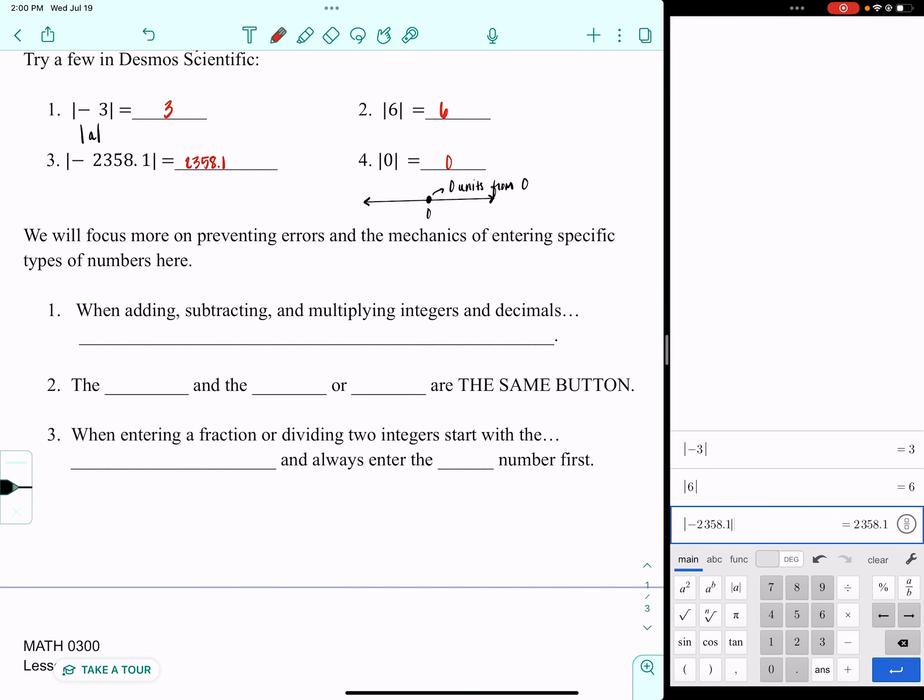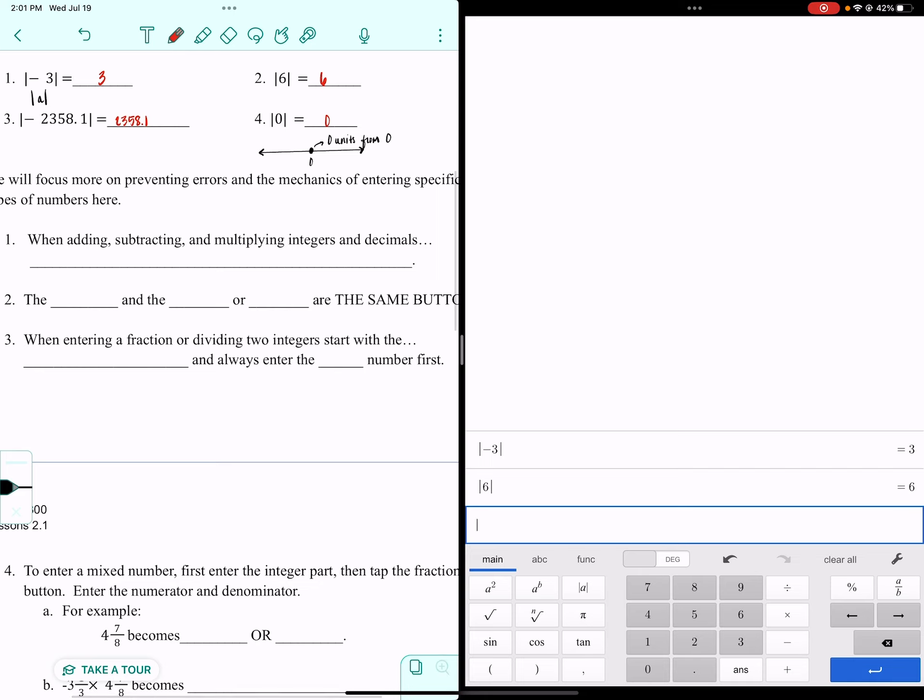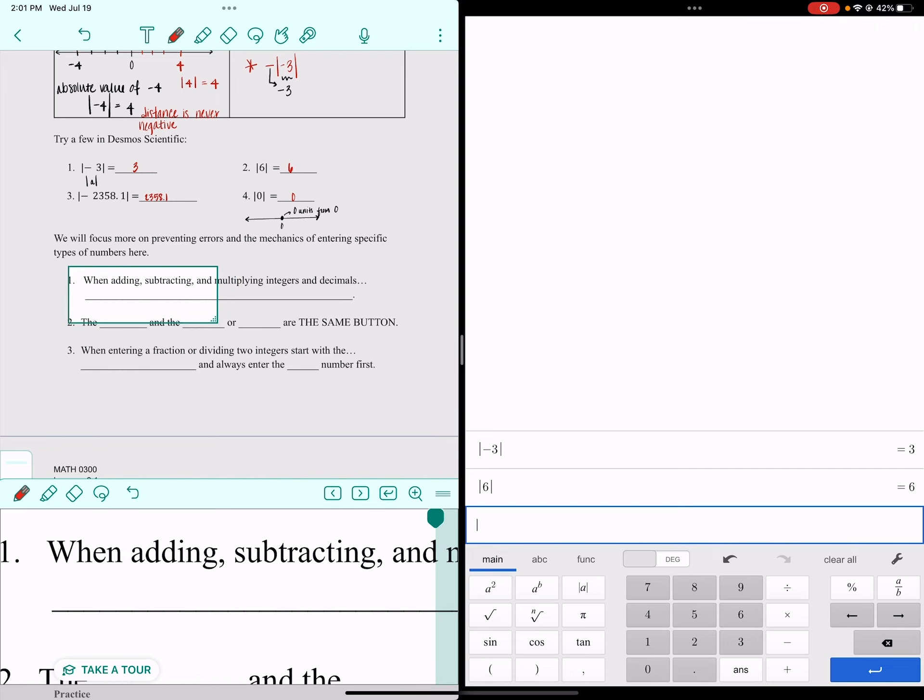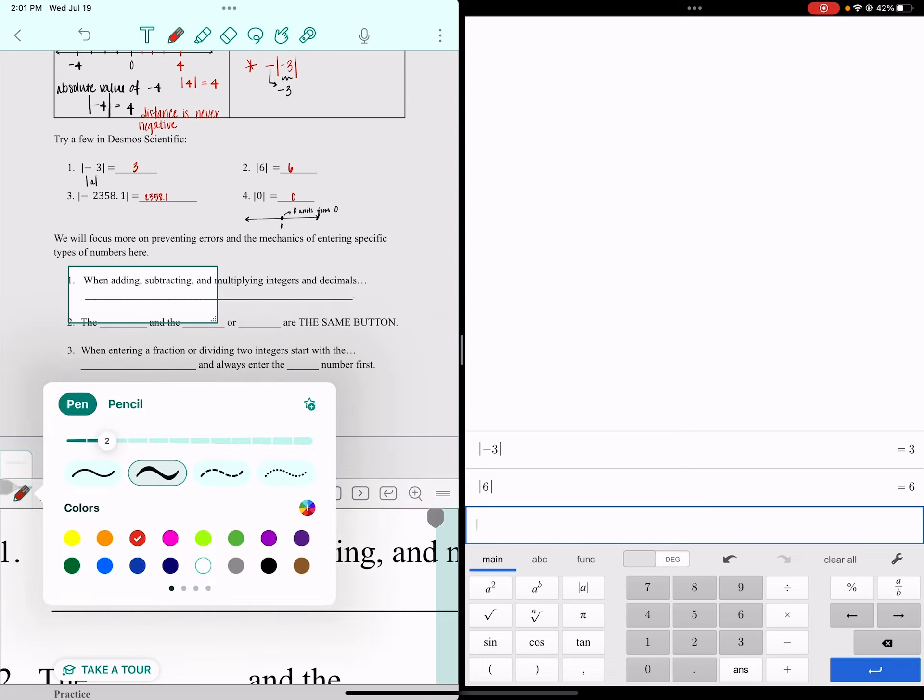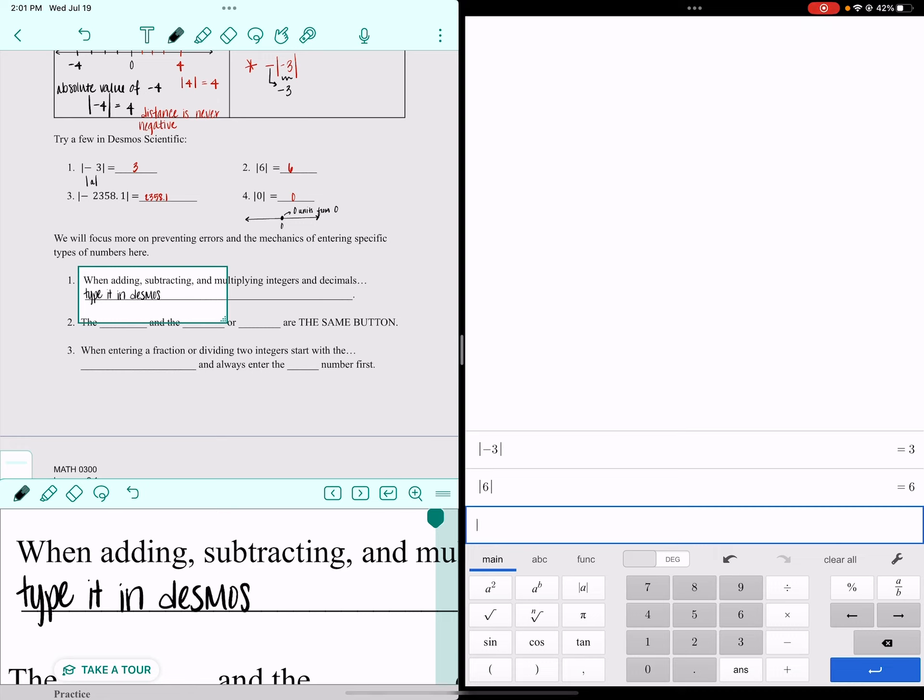I said before that we would focus more on preventing errors and entering things into the calculator rather than like when you were little and you counted bears in one pile and bears in the other pile and you added them together. So I'm going to clear out my calculator. The first thing we're going to look at is what happens when you add, subtract, and multiply integers and decimals. All you are going to do when you do those three things with integers and decimals is type it in Desmos just like it looks.